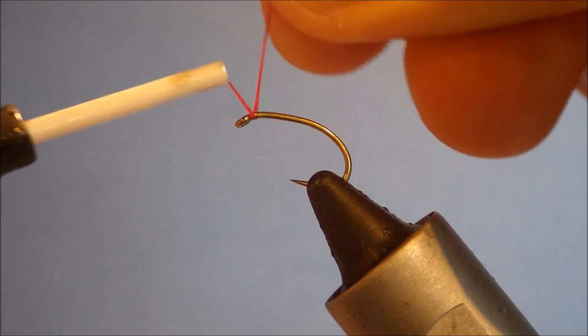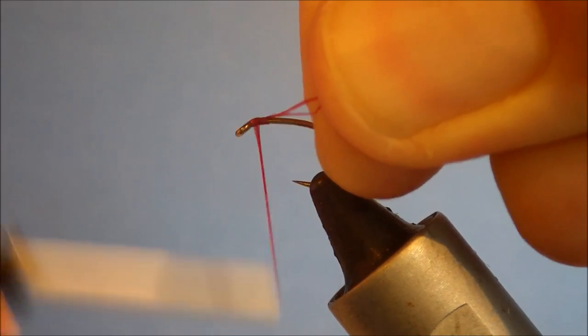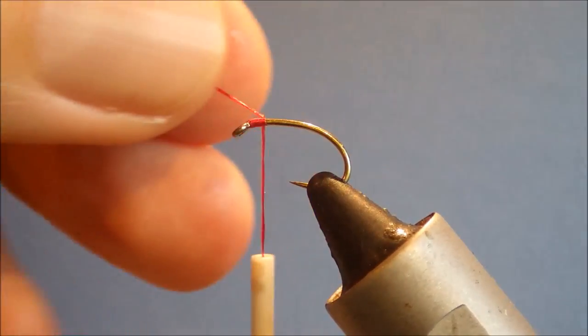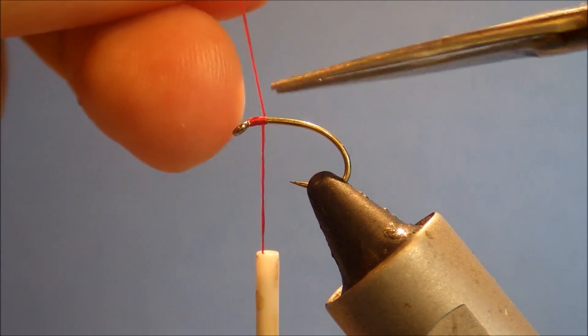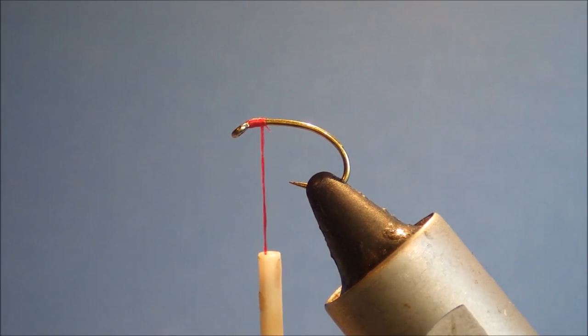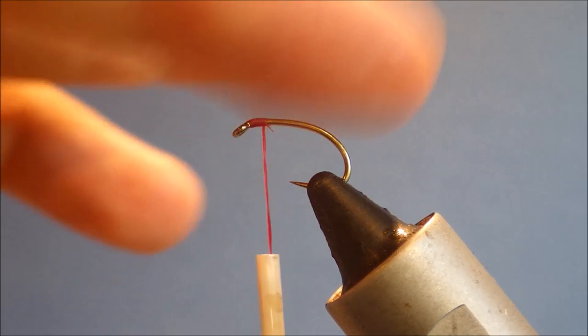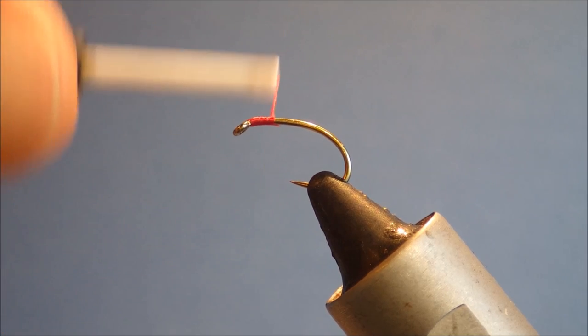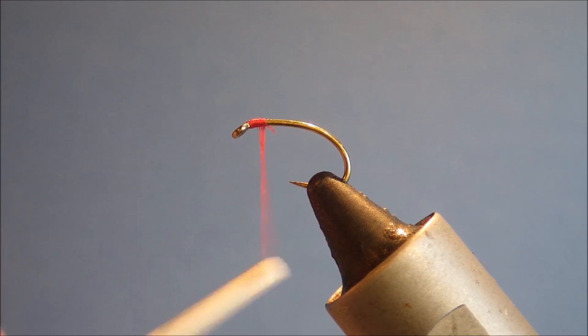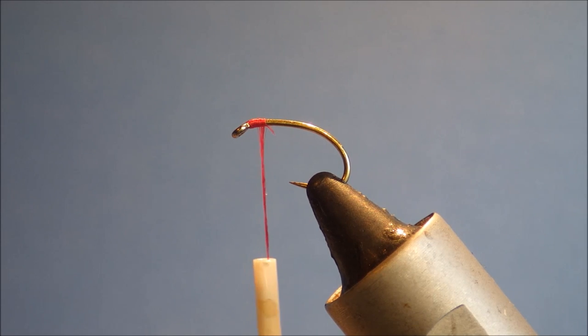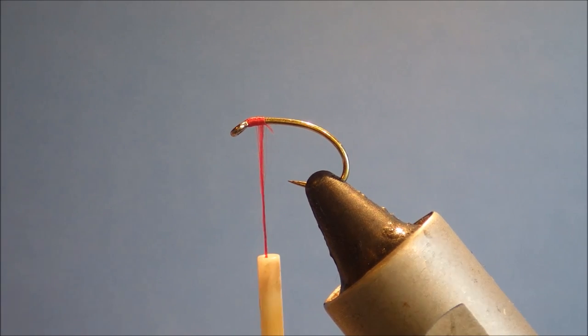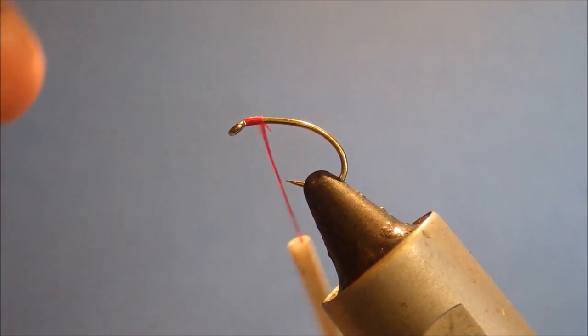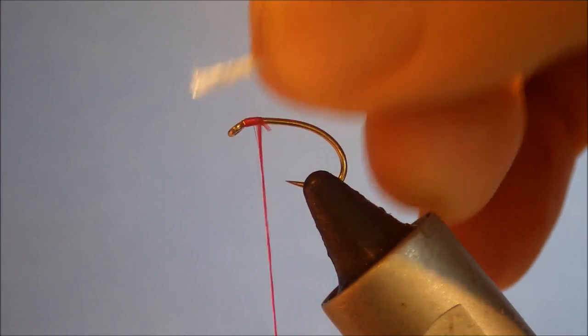So I've just started some red thread. This is Danville's Flat Waxed Nylon, this is 210 I'm using for a size 12. But you could use finer or heavier. You might want to use finer if you're just starting out so you can get more thread wraps in and have a bit more room to maneuver. And then for the breathers I'm just tying in a length of white floss.